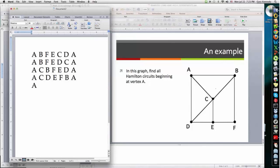Let's also see what happens if we try to do A followed by C followed by E. Well, in that case, we would have to go to F and then to B. But now there's no way to get to vertex D. So in fact, that didn't work. We can't go A, C, E.